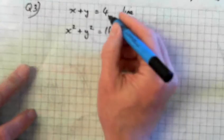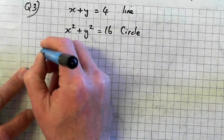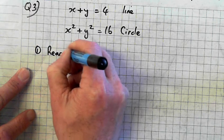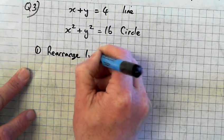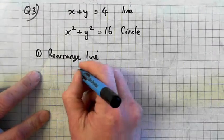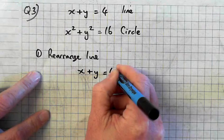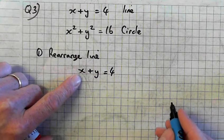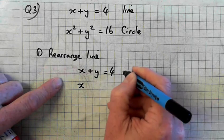Rearrange that. This is the first time we have to actually rearrange the line equation. So number one, step number one, rearrange the line equation. So I write down the line equation, x plus y is equal to 4. Now in this case we're just going to leave x on its own on the left hand side. And what does that mean? Moving the y across.